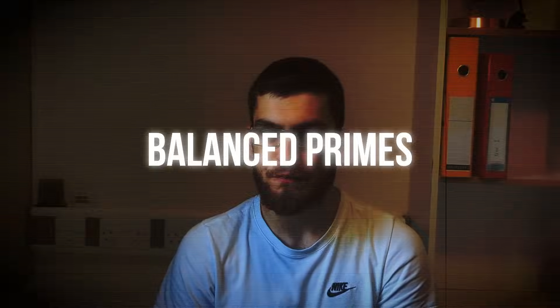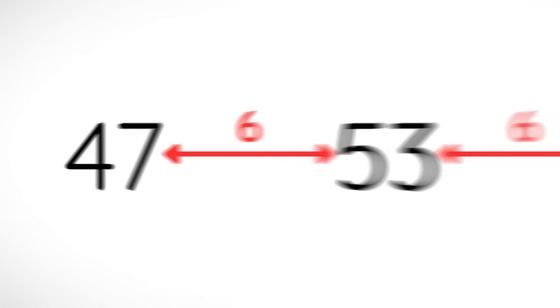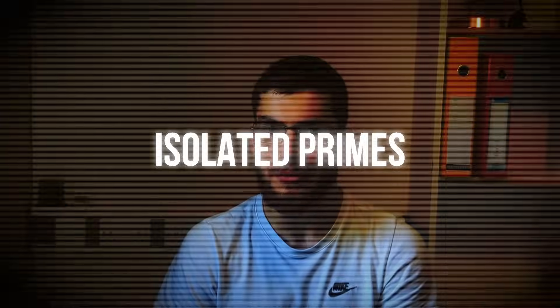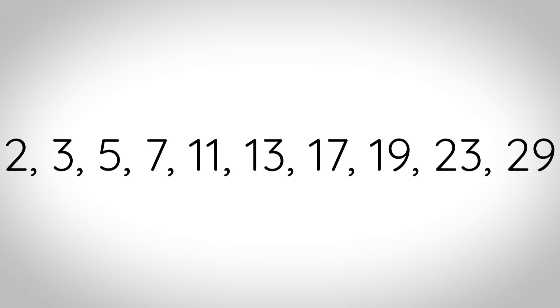Balanced primes: a prime number where the distance between the previous prime and the next prime is equal. Isolated primes: a prime number where p minus 2 is not prime and p plus 2 is also not prime.